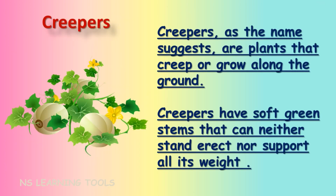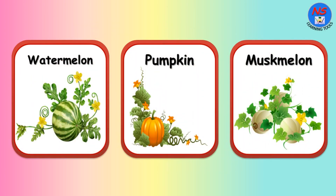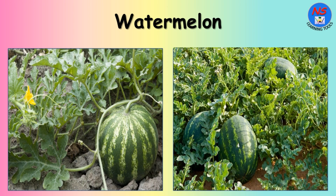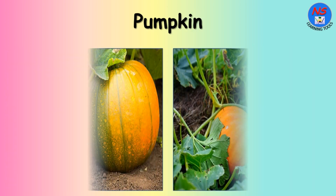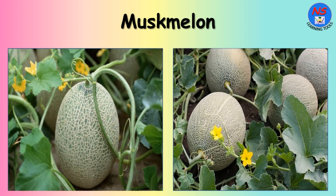Creepers, as the name suggests, are plants that creep or grow along the ground. Creepers have soft green stems that can neither stand erect nor support all their weight. Watermelon, pumpkin, and muskmelon are examples of creepers. Watermelon plants grow along the ground. As pumpkin has a soft green stem, they cannot sustain their own weight. Muskmelon fruits also rest on the ground.